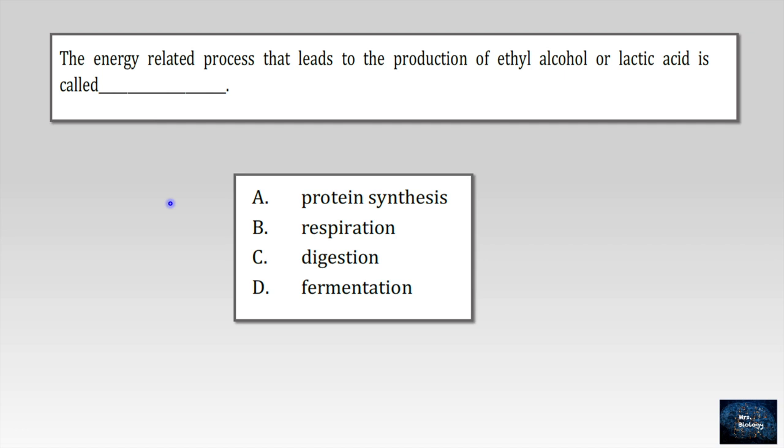This question seems easy. The energy-related process that leads to the production of ethyl alcohol or lactic acid is called. A. Protein synthesis. It's the process of changing DNA to protein. B. Respiration. It's the process of exhaling carbon dioxide and inhaling oxygen. C. Digestion process. Breaking down food to the simplest form which is a nutrient to be absorbed. The last choice. Fermentation. This type of process happens with the absence of oxygen. And we have two types. One will produce ethyl alcohol and the other one will produce lactic acid. So this is the right choice.